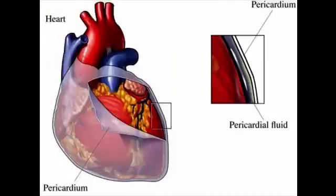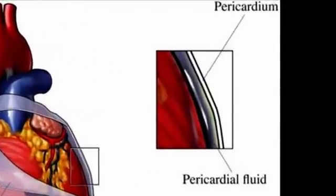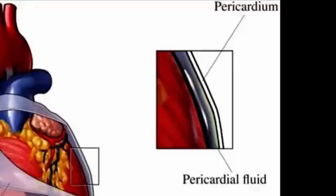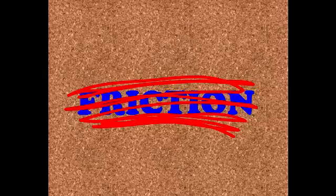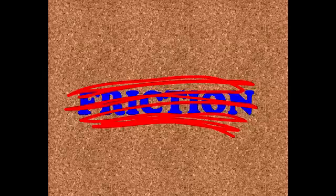The pericardial space is filled with pericardial fluid. The purpose of the fluid is to reduce friction — the heart is always beating, so we want to make sure it has a nice, smooth sac to glide in.